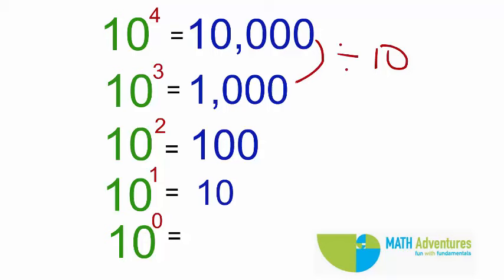Again, 1000 divided by 10 gives me 100. So, 10 cubed divided by 10 gives me 10 squared.